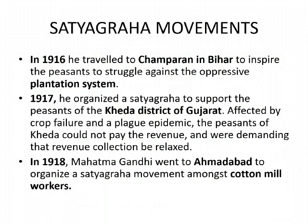Satyagraha Movements: In 1916, Mahatma Gandhi traveled to Champaran in Bihar to inspire the peasants to struggle against the oppressive plantation system. In 1917, he organized a Satyagraha to support the peasants of the Kheda district of Gujarat, affected by crop failure and a plague epidemic.